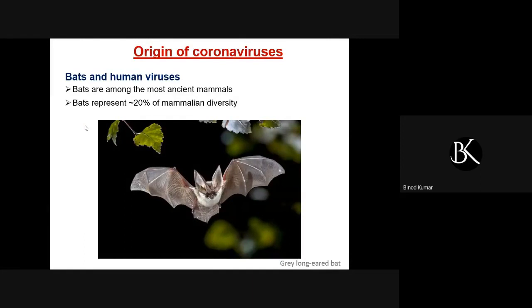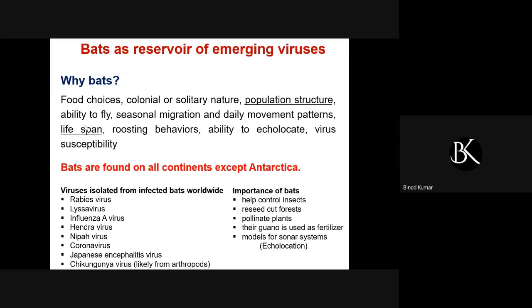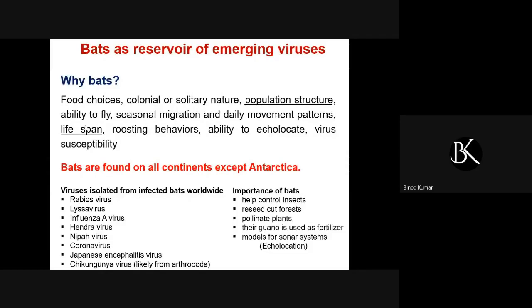To understand the origin of coronaviruses we need to understand something about bats and how they harbor human viruses. Bats are among the most ancient mammals and represent around 20 percent of mammalian diversity. Why do bats act as a reservoir for emerging viruses? The reasons include their food choices, colonial or solitary nature, and their population structure — a huge population where even a single infected bat can quickly spread the infection to all other bats in a short period.